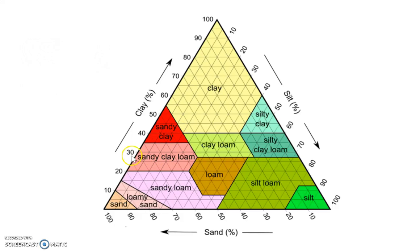Alright, let's try again. We've got 30% of clay, we've got 30% of silt, so what's left over is 40%, right? So 30-30 is 60 plus 40 makes sand, so therefore we call this a clay loam.